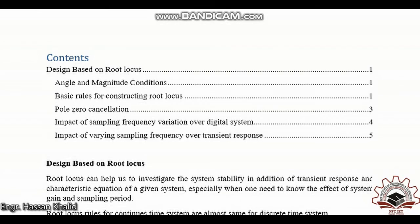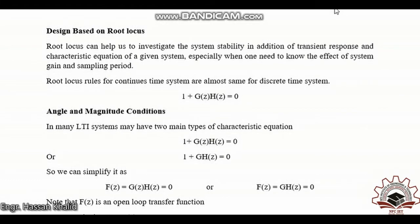Welcome to another lecture on discrete time control systems. Today we are going to study design based on root locus. Within that topic we will study the basic knowledge regarding the angle and magnitude criterion, basic rules for constructing the root locus, the impact of pole-zero cancellation on the overall system impulse transfer function, and the impact of sampling frequency variation over the digital control system and transient response.